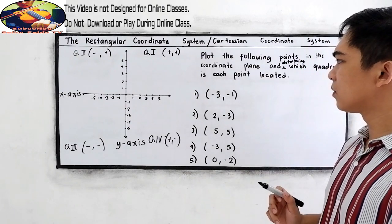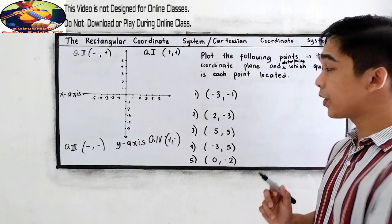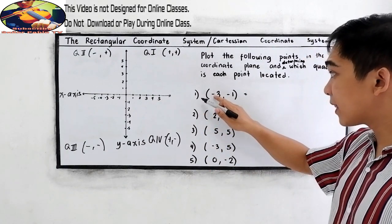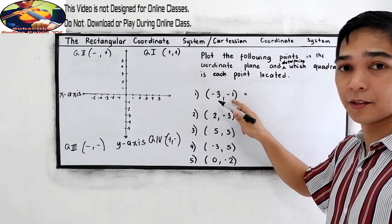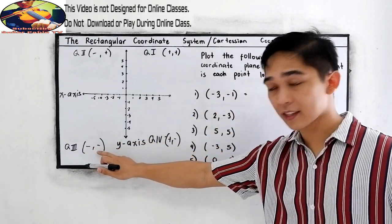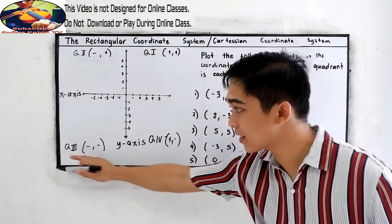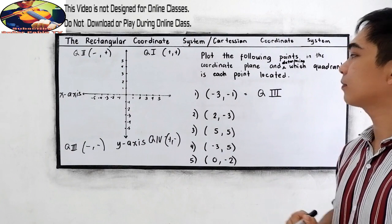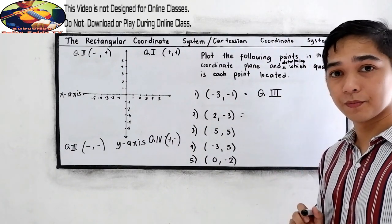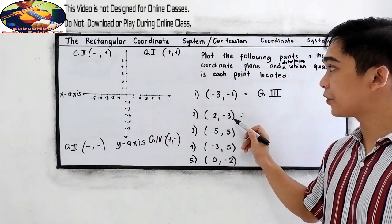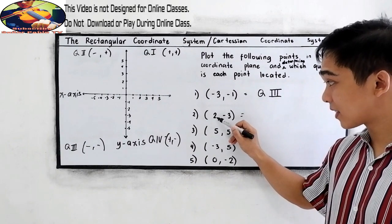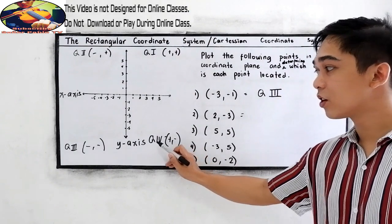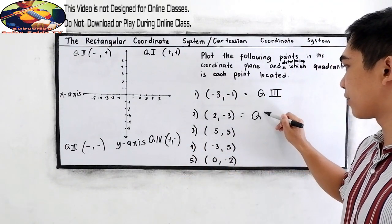Now let us first locate where the points are. Negative 3, negative 1 — both are negative, therefore it is located in Quadrant 3. Next, number 2: (2, negative 3) — positive and negative, so that is Quadrant 4.